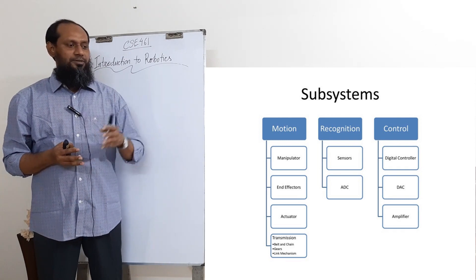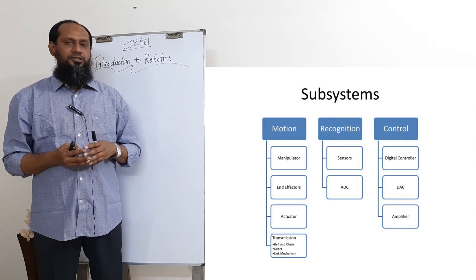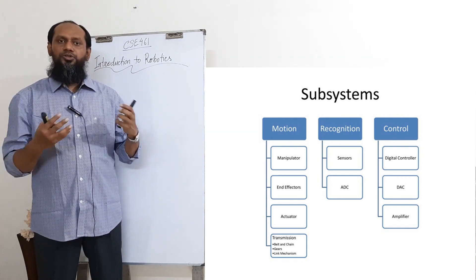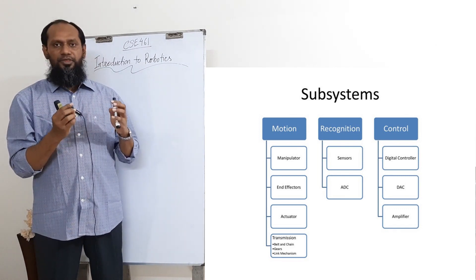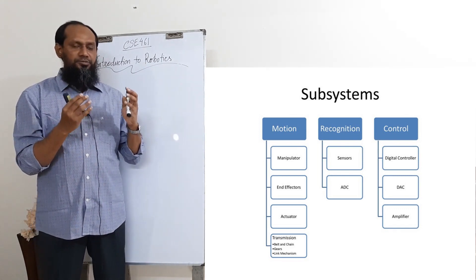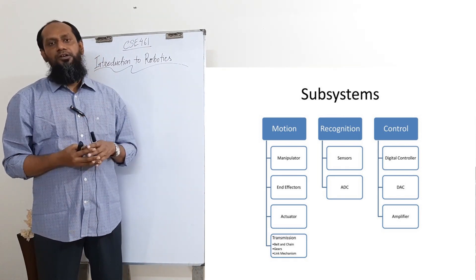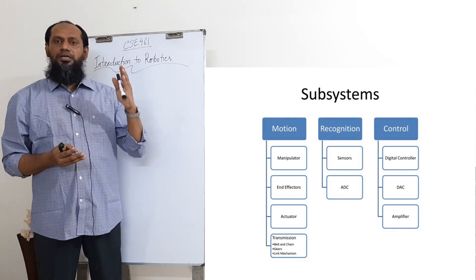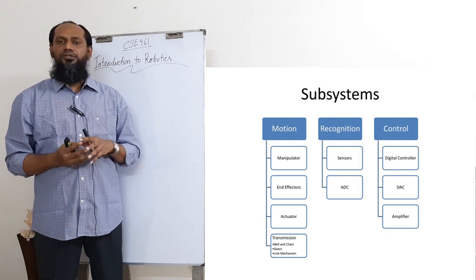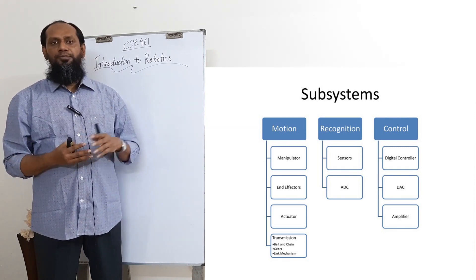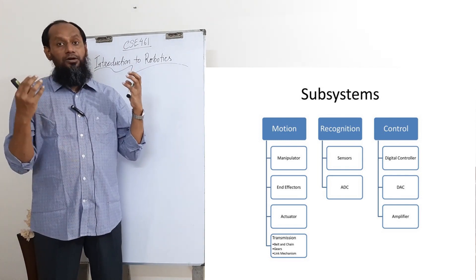In the Motion subsystem you can see there are manipulators, end effectors, different types of actuators or motors, and then some transmissions like chains, belts, and gears. At the beginning we will discuss the motion part, then Recognition — meaning sensors and how to sense the world — and then the Control subsystem, which covers how to make decisions.